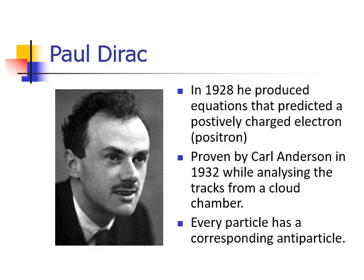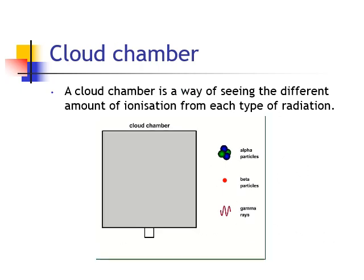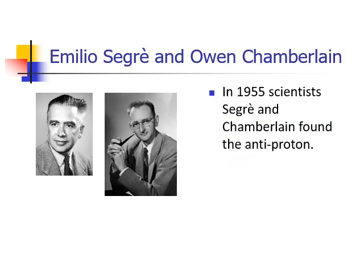Anderson won the Nobel Prize for Physics in 1936 for his work. He used a cloud chamber, which is a device where you can see ionizing radiation — alpha sources leave strong trails, like planes in the sky; beta sources are less ionizing; and gamma radiation leaves no visible trail. A positron behaves like a beta particle, but by placing it in an electric field, you can deflect it in a particular way to show it carries a positive charge rather than being an electron. This led to a whole load of discoveries about antimatter.